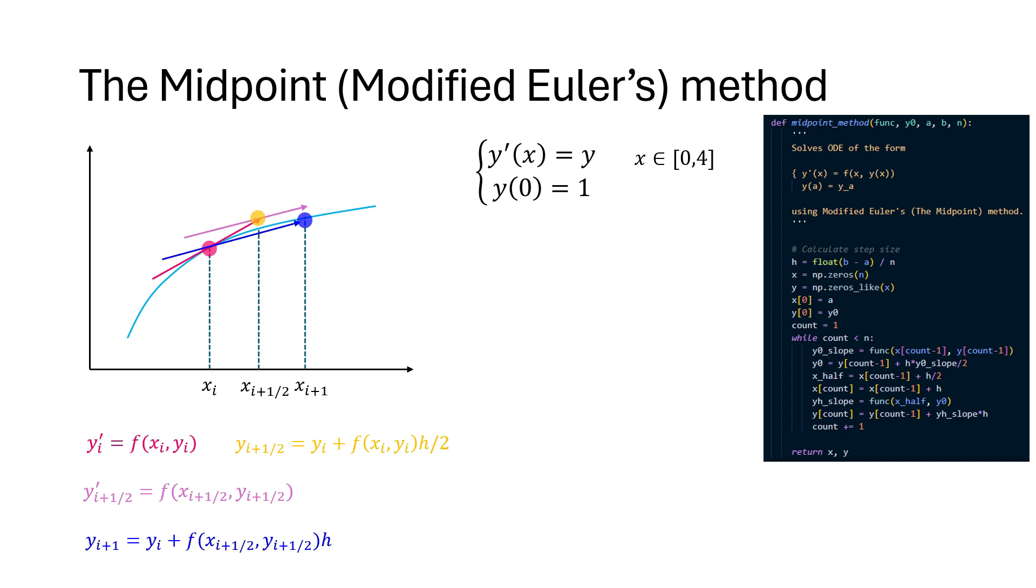Again, if you look closely, it is very similar to what we saw in Euler's method and also in Hune's method. Here, we only made a few changes in the while block.